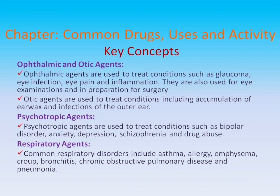Ophthalmic and otic agents: Ophthalmic agents are used to treat conditions such as glaucoma, eye infection, eye pain, and inflammation. They are also used for eye examinations and in preparation for surgery. Otic agents are used to treat conditions including accumulation of earwax and infections of the outer ear. Psychotropic agents are used to treat conditions such as bipolar disorder, anxiety, depression, schizophrenia, and drug abuse. Respiratory agents: Common respiratory disorders include asthma, allergy, emphysema, croup, bronchitis, chronic obstructive pulmonary disease, and pneumonia.